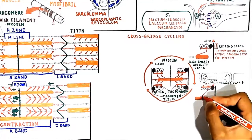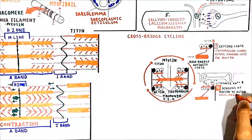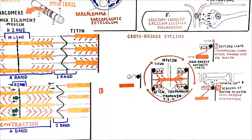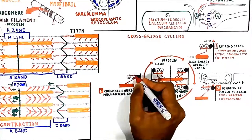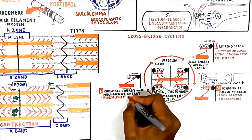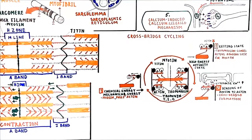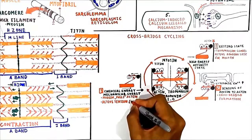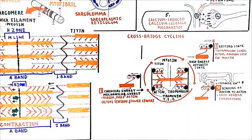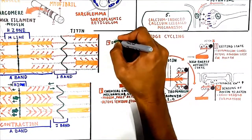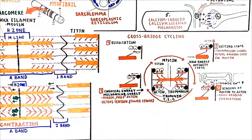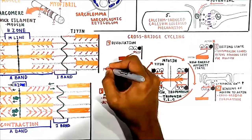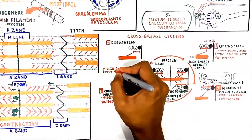In the second step, the myosin head binds to actin and forms a cross-bridge. In the third step, once myosin binds to actin, chemical energy is transferred to mechanical energy, causing myosin to pull the actin filament. This generates active tension in the muscle and is commonly referred to as the power stroke. In the fourth step, the dissociation stage, a molecule of ATP attaches to the myosin head, causing the cross-bridge to detach. Binding of ATP causes myosin to enter a state of decreased energy and affinity.